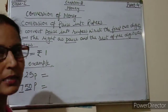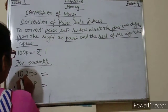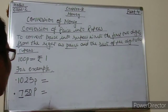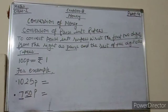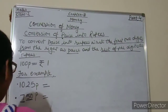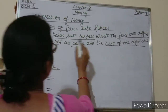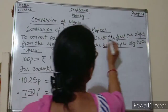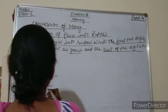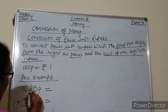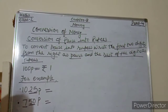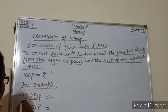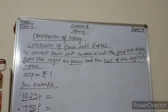Here I have given you examples. The first example is 1025 paise. So how will we convert paise into rupees? We have to write the first two digits from the right as paise, and the rest of the digits as rupees.